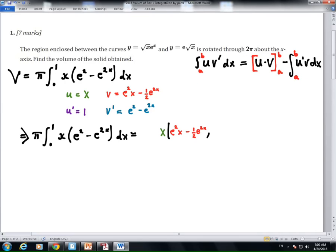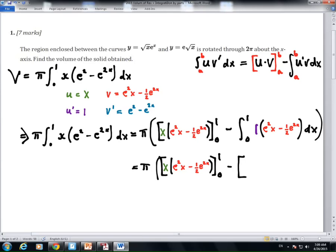In this case, we have our u times v, and then we subtract the integral. Here we go from 0 to 1, we evaluate, and we'll do that a little bit later. And then, here we have the integral of u prime v, and the rest is all number crunching. We leave that to be evaluated after we anti-differentiate this.